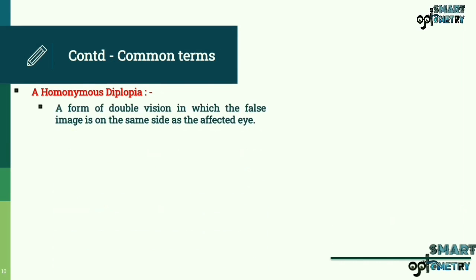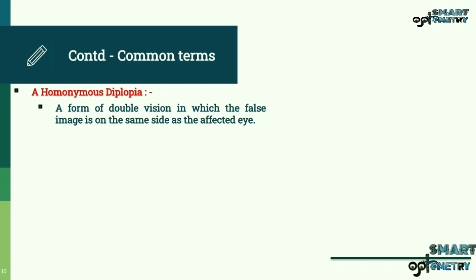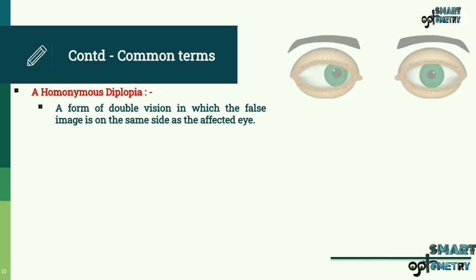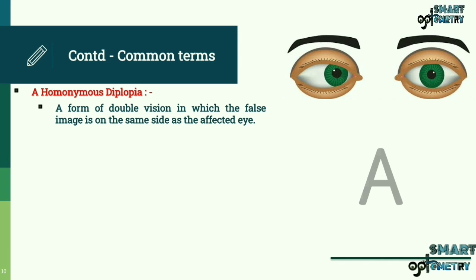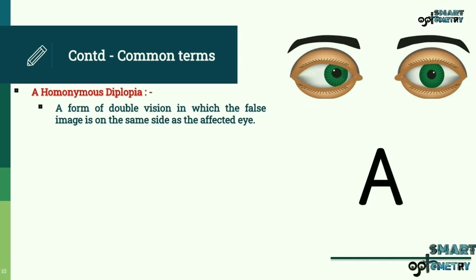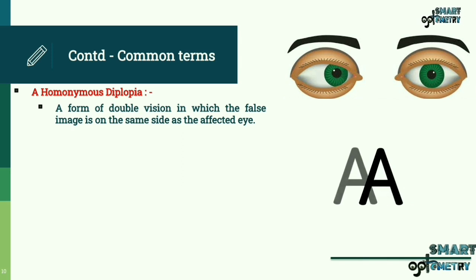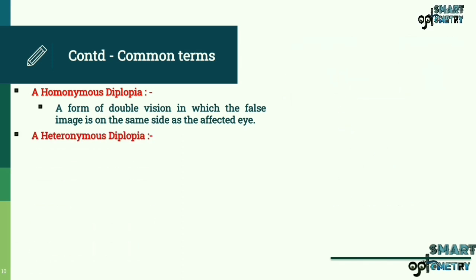Homonymous diplopia is a form of double vision in which the false image is on the same side as the affected eye. For example, if the right eye has a convergence squint — that is, the eye moves towards the nose — and the left eye is normal, the diplopic image is seen to the right of the image seen by the unaffected eye.